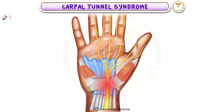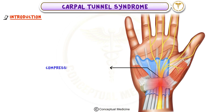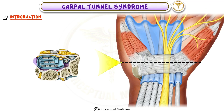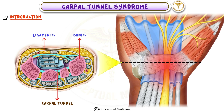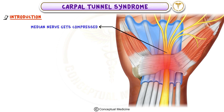Carpal Tunnel Syndrome. In this video we will learn about carpal tunnel syndrome, a common condition caused by the compression of the median nerve as it passes through the carpal tunnel in the wrist. The carpal tunnel is a narrow passage surrounded by bones and a ligament. When this space becomes too tight, the median nerve gets compressed.